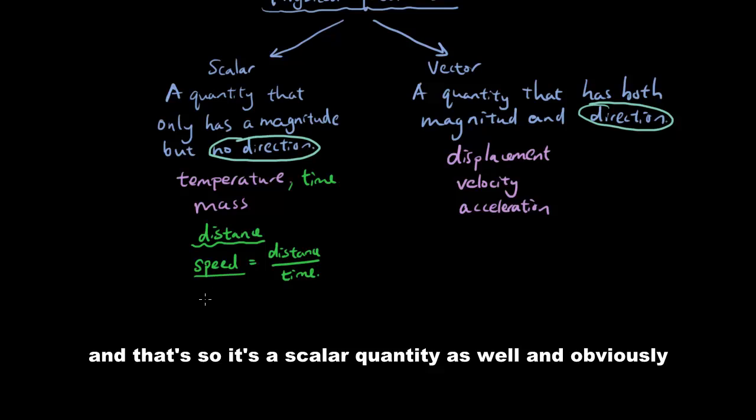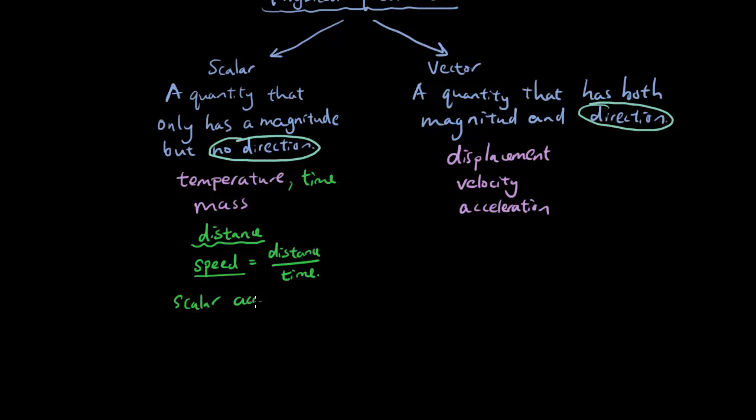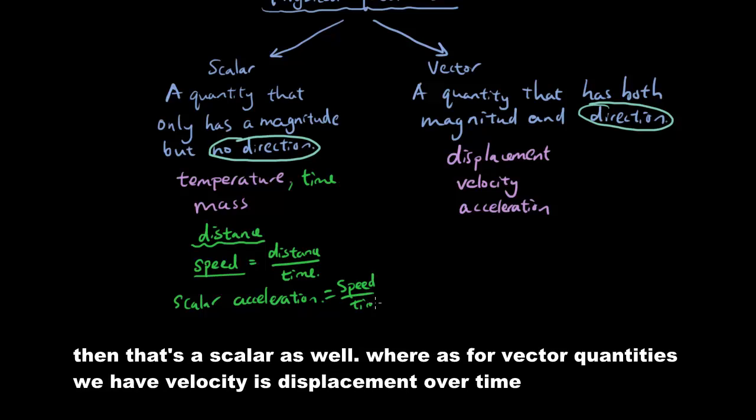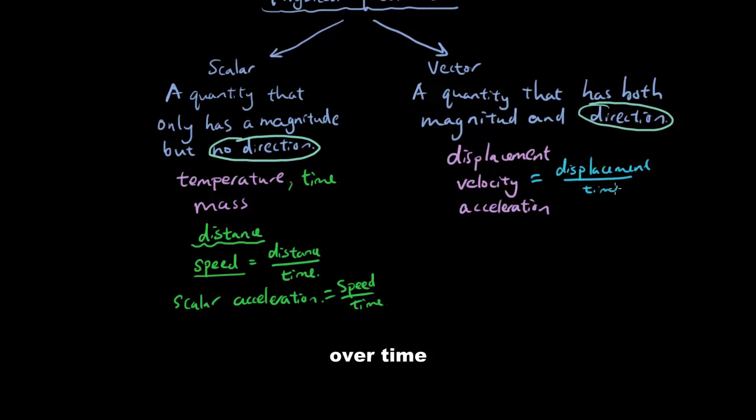And then obviously acceleration. If we define acceleration as speed over time, then that's a scalar as well. Whereas for vector quantities, we have velocity is displacement over time, and acceleration is velocity over time.